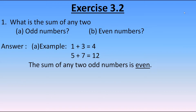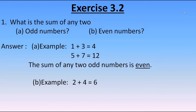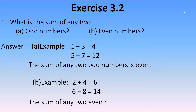Now let's take examples for even numbers. Taking 2 and 4 — when I add them, I get 6. Both are even and the answer is also even. Another example: 6 plus 8 gives 14, which is also even. So the sum of any two even numbers is even.